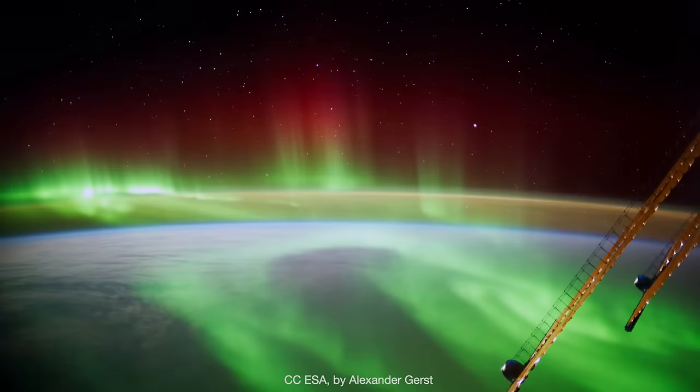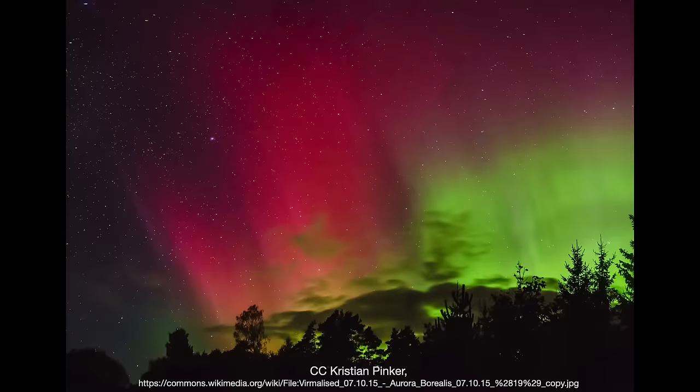In a very strong aurora, you can sometimes see a layer of red light above the green glow, like in this amazing photo taken from the International Space Station. And here's what it looks like from Earth. This red color comes from another forbidden state of oxygen.